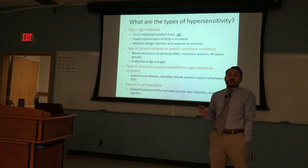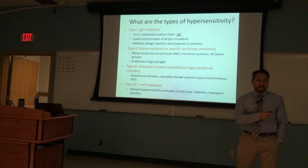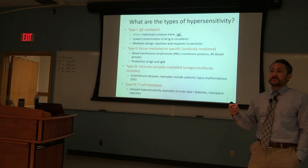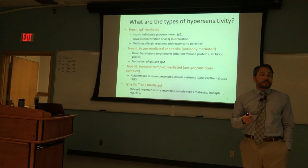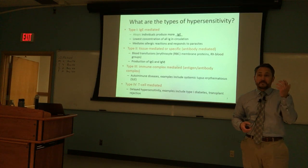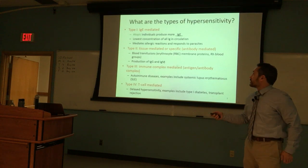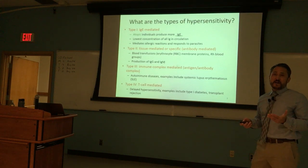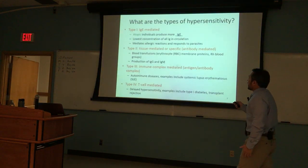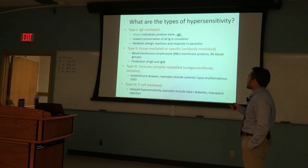There are certain individuals called atopic individuals who are genetically predisposed to making more IgE than the next person, making them more sensitive to allergies. There are people that are like a walking allergy — allergic to everything. IgE is the lowest concentration of all the immunoglobulins in circulation, so when it gets triggered and maintained, you have a monster response.